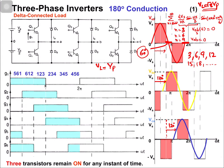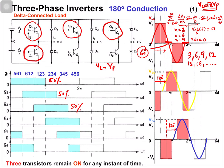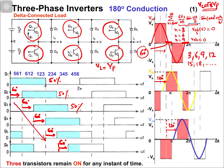In the 180 degree configuration with 50 percent duty cycle, if we label the switches 1, 3, 5 for the high side and 4, 6, 2 for the low side, we get pulses that are 60 degrees delayed with respect to each other. The gate signal for switch 2 is 60 degrees delayed with respect to switch 1, and switch 3 is a further 60 degrees delayed. You can easily generate these using any microcontroller to operate your three phase inverter in square waveform mode.